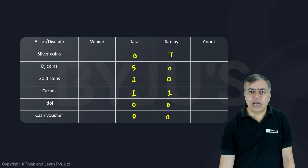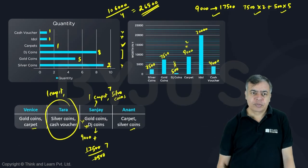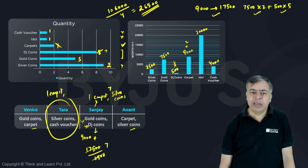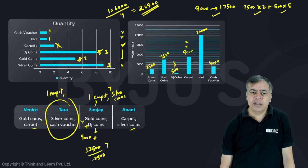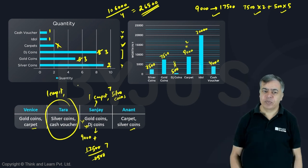Removing Tara's allocation from the total: carpet gone (0 left), 5 DJ coins gone (3 remaining), 2 gold coins gone (3 remaining). This is the remaining part to distribute between Venice and Anant.